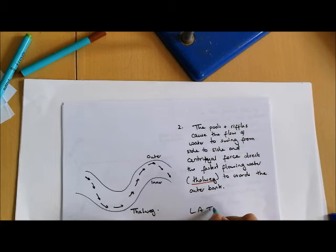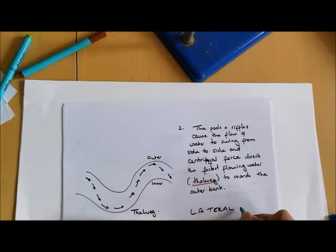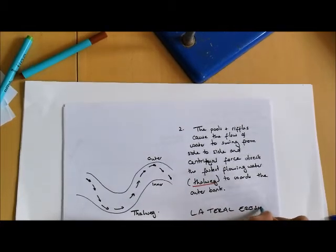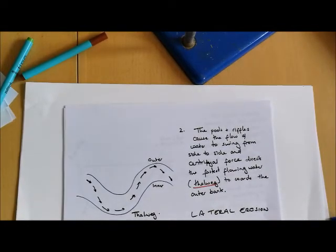Let's just make sure we have that in there. Remember, lateral erosion is what dominates in the middle course of the river. In the upper course, it's vertical erosion. But here we have that lateral side to side erosion.